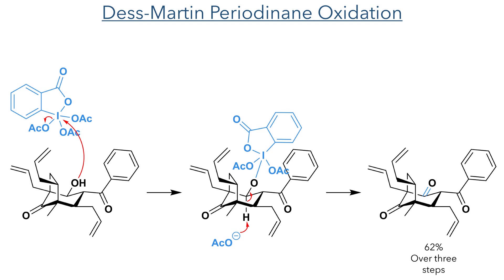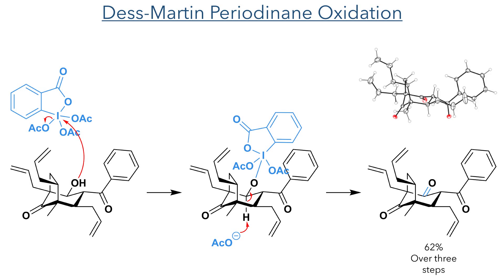This was taken forward without purification and was oxidized using DMP. The hydroxyl group first attacks the hypervalent iodine and eliminates a molecule of acetate. This then acts as a base to deprotonate the molecule, which forms the target carbonyl group, with a 62% yield obtained over three steps. The structure of this product could be confirmed using X-ray crystallography.